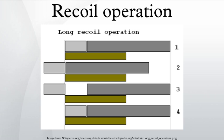One unusual variant is the toggle bolt design in C93 of Hugo Borchardt, used also in the German Luger pistol.